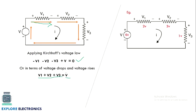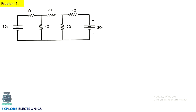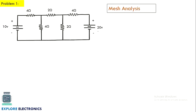In the previous video, I took the example of voltage across three resistors with a supply voltage of 6 volts. Now let us see the actual problem. In this problem, we have 5 resistors connected in a specific fashion with two voltage supplies: one of 10 volts and another of 20 volts. To find the currents in this circuit, we need to first understand mesh analysis.